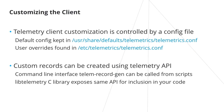Customization is controlled by a config file with the default config kept in the /usr/share/defaults/telemetrics/telemetrics.conf file. You can override the default config by placing a copy of the telemetrics.conf file in /etc/telemetrics and then making modifications to that file. Keeping your custom config file in /etc/telemetrics adheres to the stateless nature of Clear Linux.